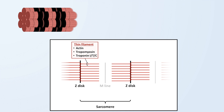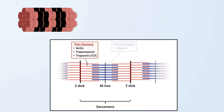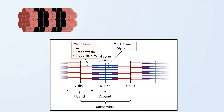Midway between the Z-discs are the M-lines, to which are anchored thick filaments composed of myosin. The myosin protein has a long tail and a head attached via a flexible neck, which contains an actin binding site. The thick and thin filaments overlap in a pattern resulting in three types of bands: wherever myosin is present is the dark A-band; wherever myosin is absent is a light I-band; and the area that surrounds the M-line is called the H-zone.